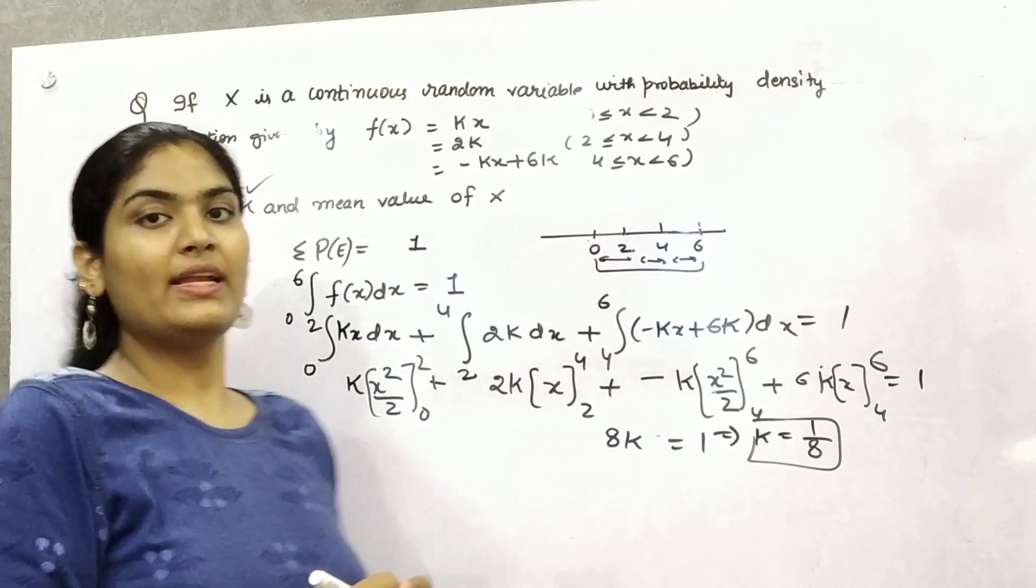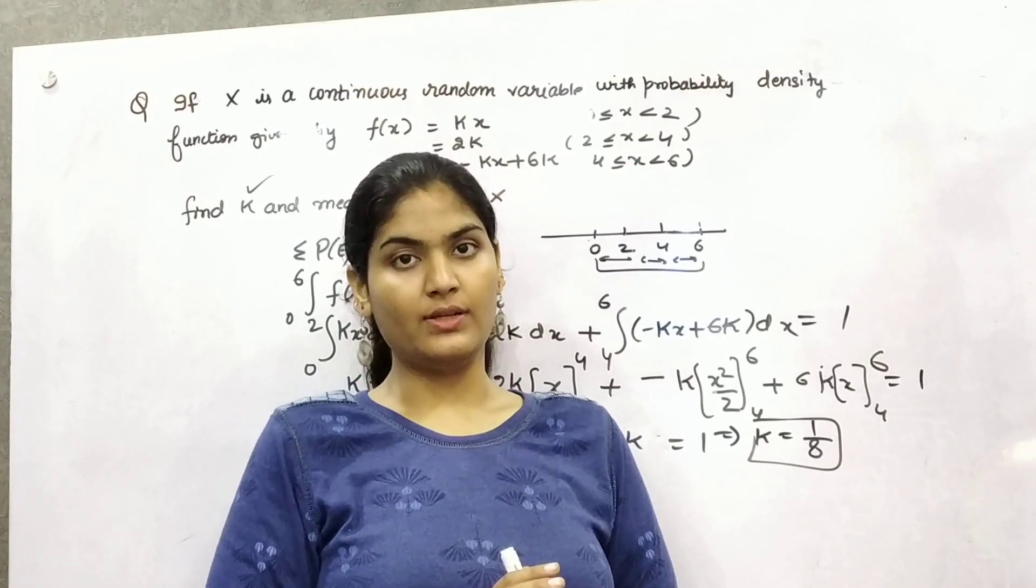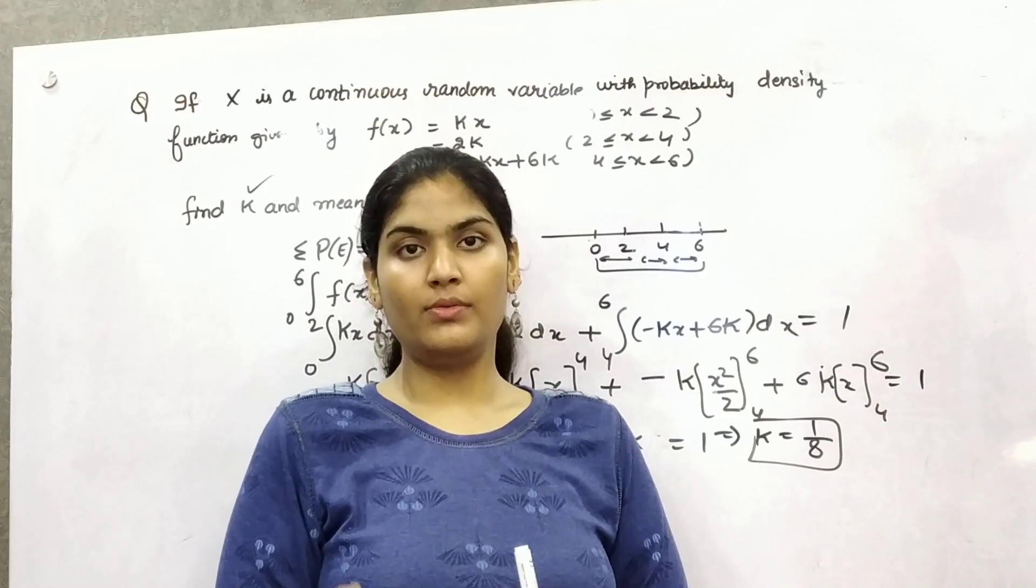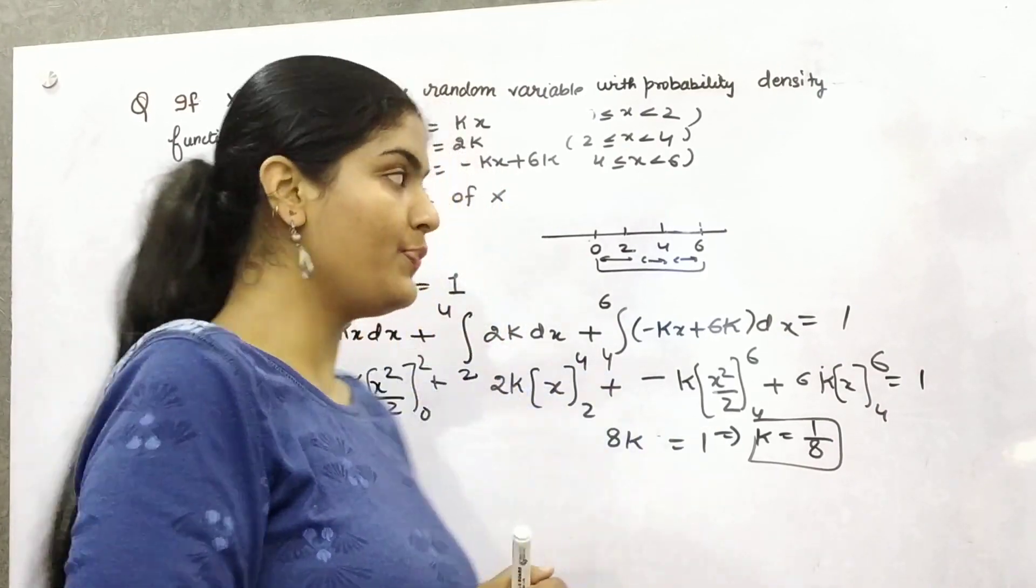Now to find out mean value of x. You have probability function. You can multiply it with the number of values like with x. Then you can get the mean value.